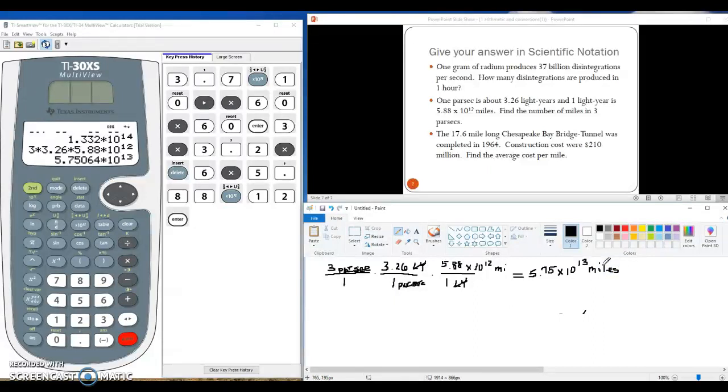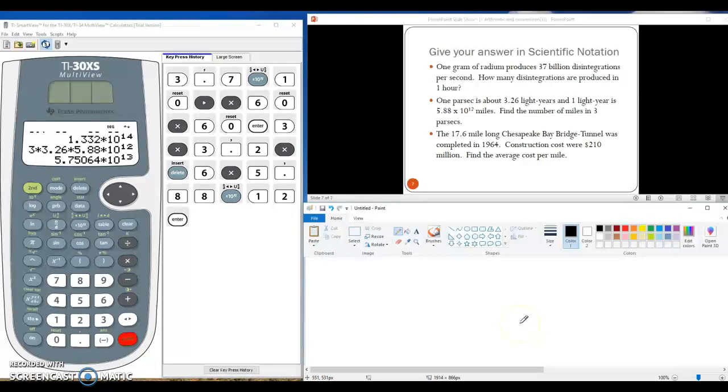And we'll do one last example. Our last example tells us that the 17.6 mile long Chesapeake Bay Bridge Tunnel was completed in 1964. Construction costs were 210 million. Find the average cost per mile. Again, I have to figure out this number of 210 million before I can start. I start with 210, put a comma, and then I'm going to start adding zeros. I add a set of three zeros,